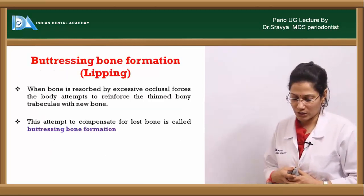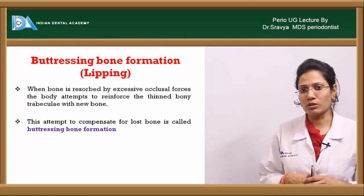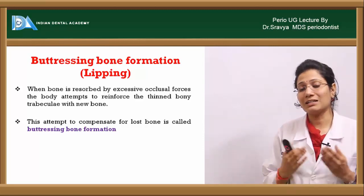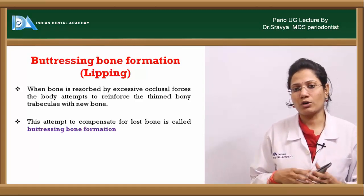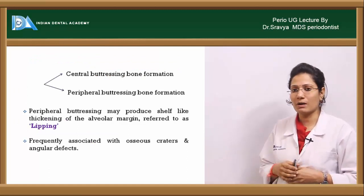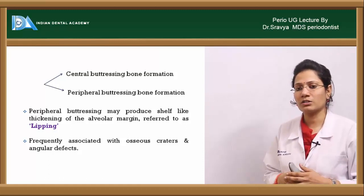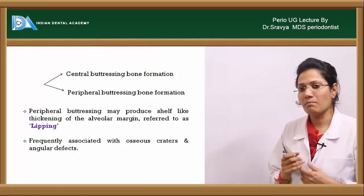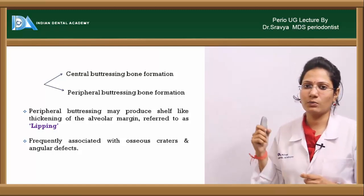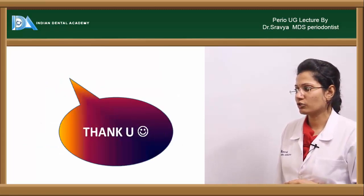Buttressing bone formation occurs as the body tries to repair or remodel itself in response to altered occlusal forces. The body forms a condensation of the alveolar bone, called buttressing bone formation. There are two types: central buttressing bone formation and peripheral buttressing bone formation. Peripheral buttressing bone formation results in the thickening of the alveolar margins, referred to as lipping, and is frequently associated with osseous craters and angular defects. That concludes the topic on trauma from occlusion.